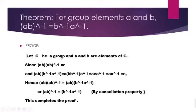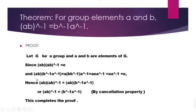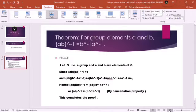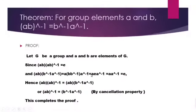B B inverse is identity, so you get A times identity times A inverse. A times identity is just A, so you get A times A inverse, which is nothing but identity again by the inverse axiom. So what we observed is that AB composed with AB whole inverse is identity, and also AB composed with B inverse A inverse is also identity.